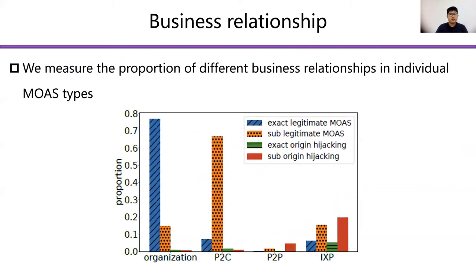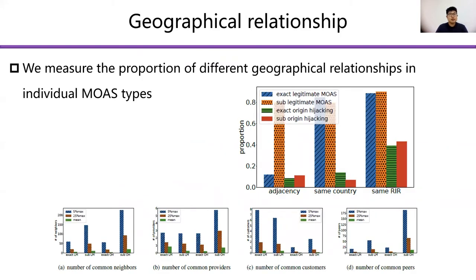Inspired by the results of rank difference, we assume that there must be potential business relationships between ASes in legitimate MOAS. So we measure the proportion of different business relationships. There is a clear distinction between legitimate MOAS and origin hijacking in terms of the proportion of P2C and organizational relationships. Considering victims of origin hijackings could be located anywhere globally, we focus on three geographical relationships: adjacency, same country, and same RIR. The results show that most legitimate MOAS conflicts happen within the same country or the same RIR.